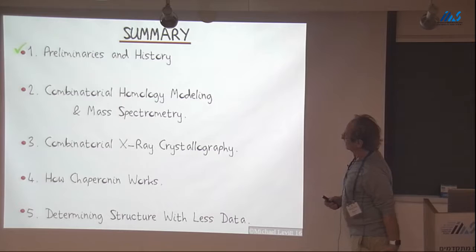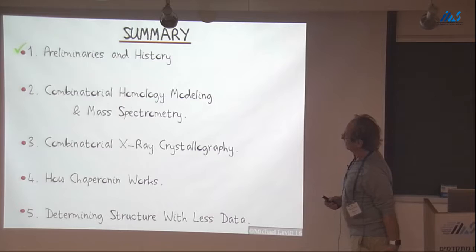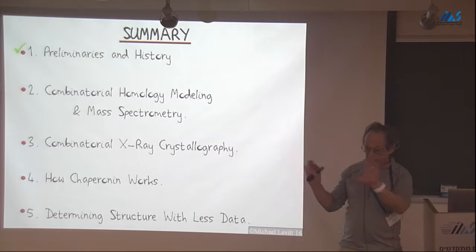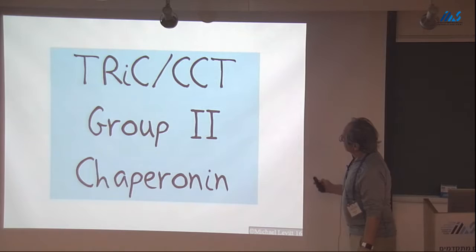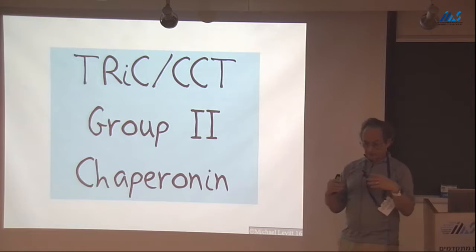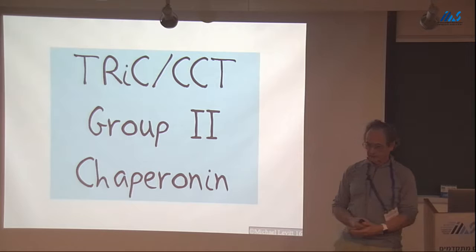Now jumping forward five or six years ago to combinatorial homology modeling - a term I coined after Googling found that those three words had not been used together before. I'm going to talk about a system which is really an amazing molecule: a group two chaperonin. Chaperonins are molecules that help proteins fold. It's a group two chaperonin because bacteria have group one chaperonins, and archaea and eukaryotes have class two chaperonins.